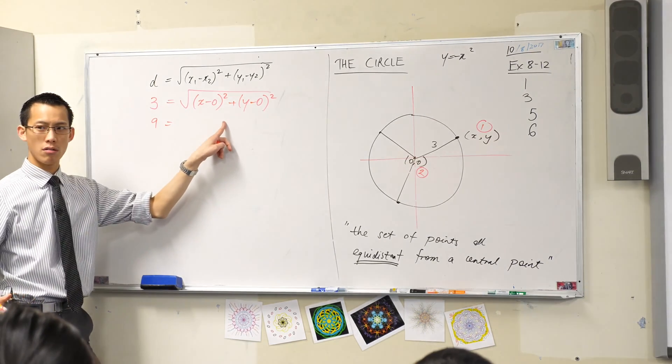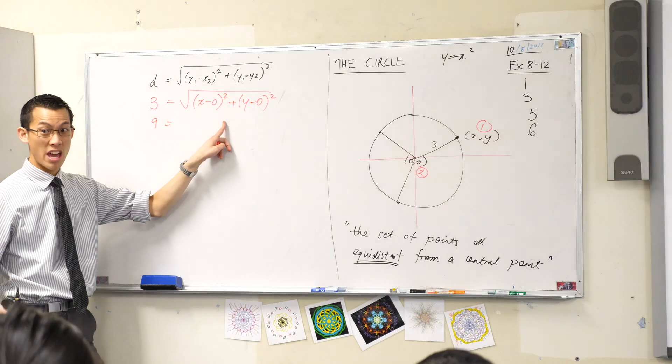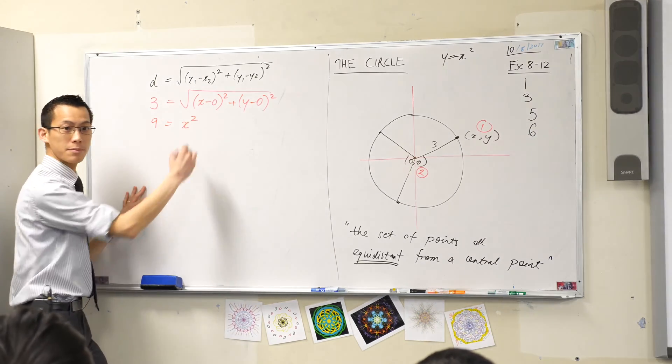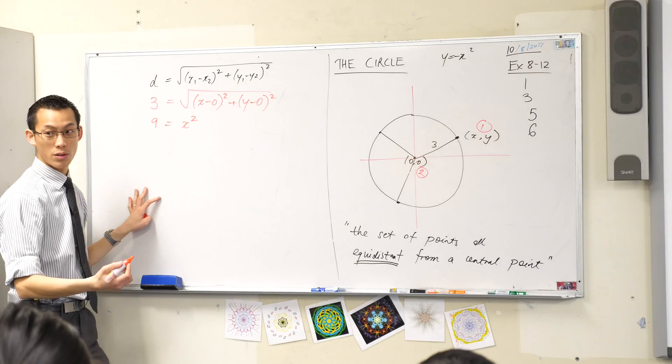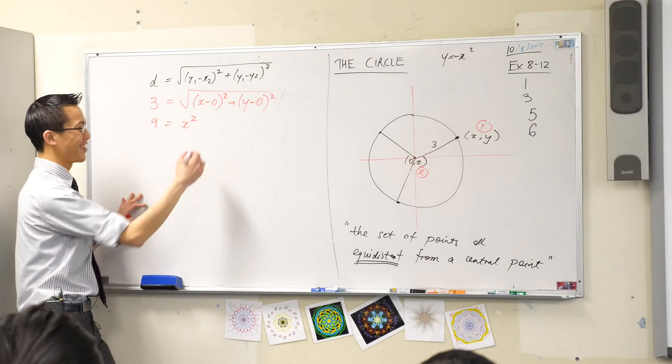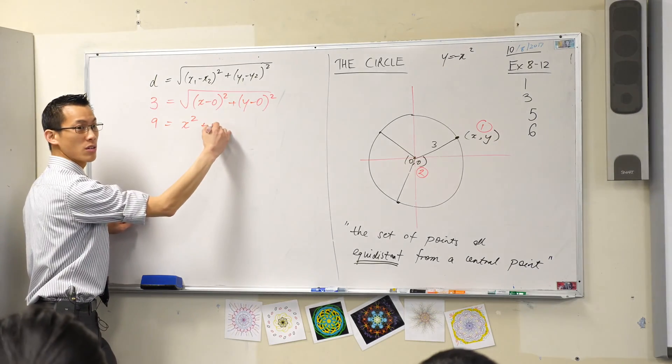x minus 0—that's just equal to x. So that guy is x squared. y minus 0 is just y, so this part is y squared.